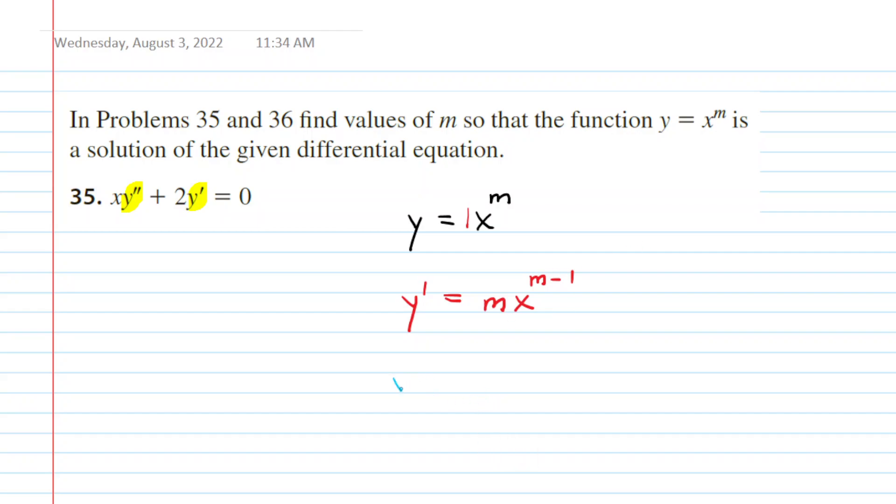Next we'll compute the second derivative, y double prime. We multiply our power, m minus one, times the present coefficient, which is m. So we have m multiplied by m minus one, and then x to a new power. We subtract one from that old power, so we'll have m minus two.